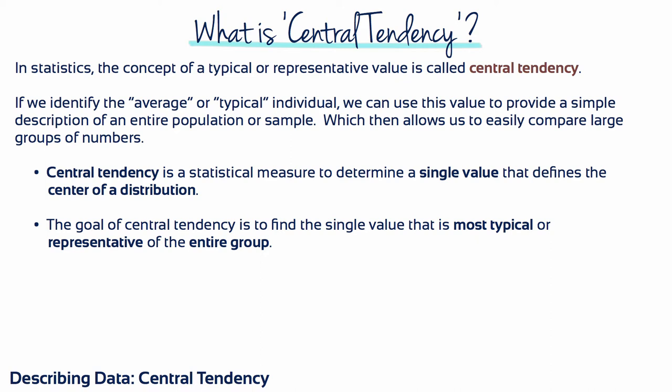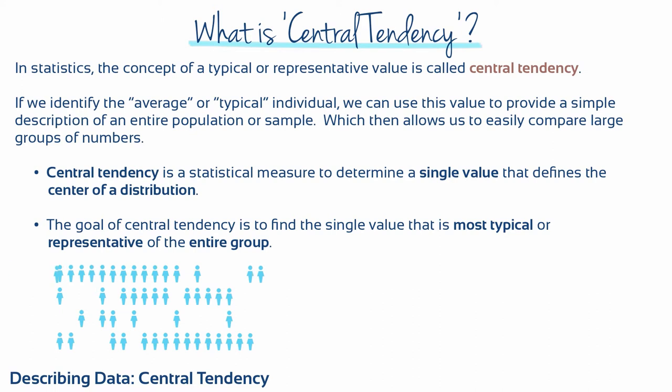This average value can then be used to provide a simple description of an entire population or sample. Because central tendency characterizes what is typical for a large population, it makes large amounts of data more digestible. The expression number crunching illustrates this aspect of data description. In other words, we take a distribution consisting of many scores and crunch them down to a single value that describes them all.